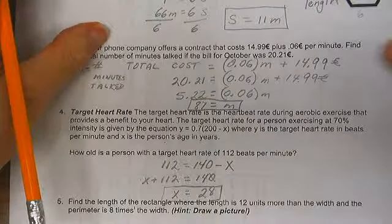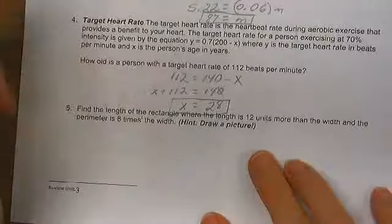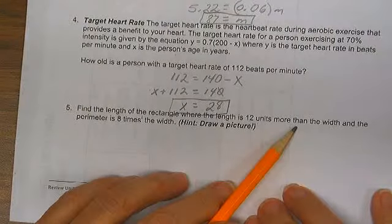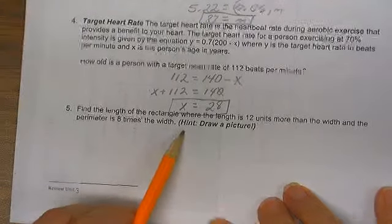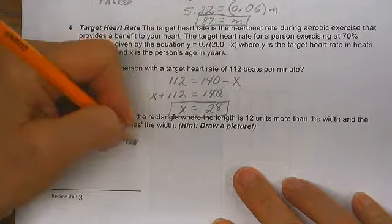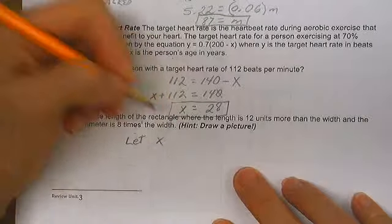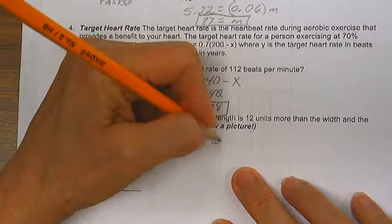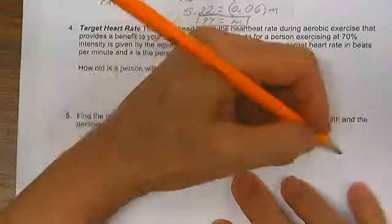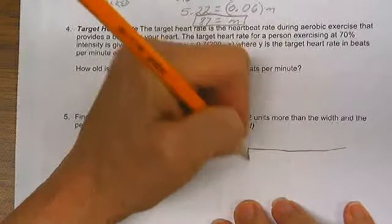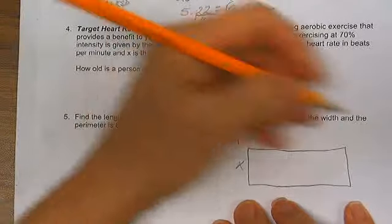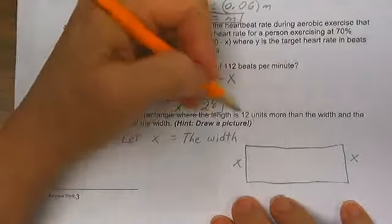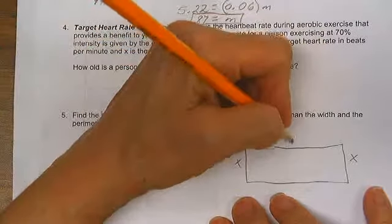One last problem, and then we're done. Find the length of the rectangle where the length is 12 units more than the width, and the perimeter is 8 times the width. We begin with the width. So let x equal the width of the rectangle. So that's x, and that's x. The length is 12 units more. That means we add 12.